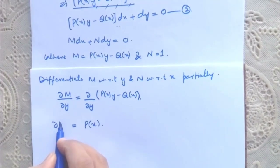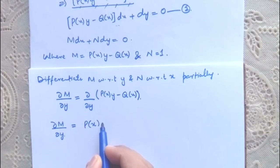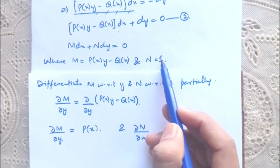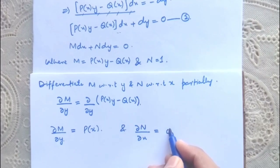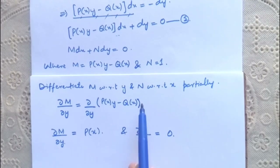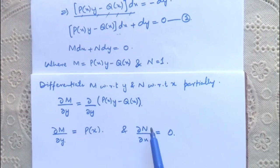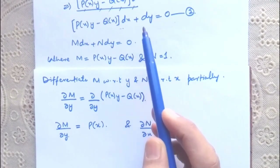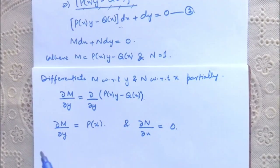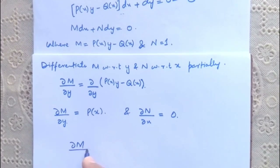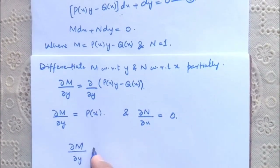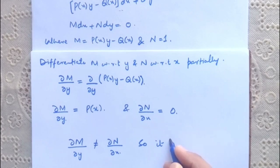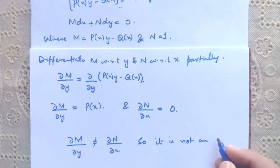So the partial derivative of M with respect to y equals P(x), and the partial derivative of N with respect to x — since N = 1 — equals zero. We are differentiating partially because we are seeking the integrating factor that makes the differential equation exact. Since ∂M/∂y ≠ ∂N/∂x, it is not an exact differential equation.